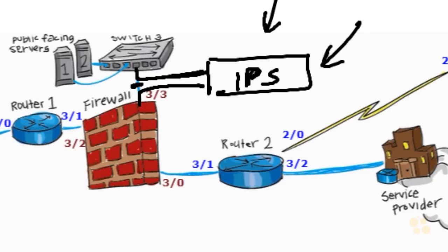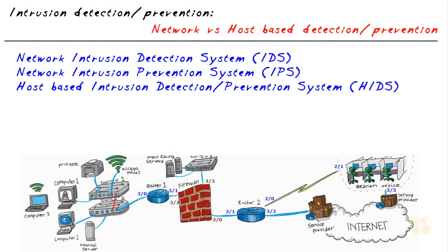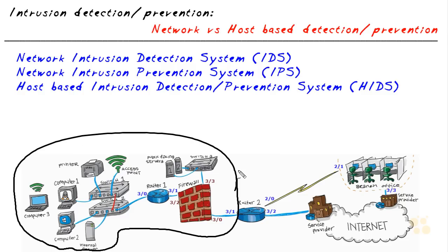Let's put on our executive hats for a moment and imagine we own this company. If a vendor offered a free intrusion prevention system, we'd want to make sure it works and isn't itself an attack vector — but if it costs nothing, absolutely, we'd always want that. The reality is that a device is going to cost money. In fact, a network-based intrusion detection or prevention system, depending on how it's implemented, could be in the tens of thousands of dollars.